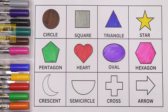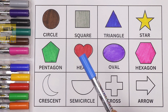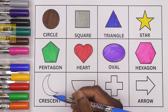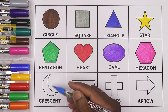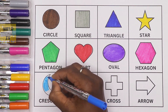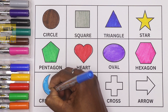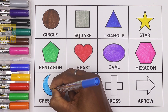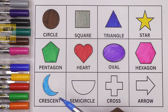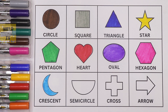Now I'll take blue color to color this shape. This is a crescent. Okay, so now it is a blue crescent, where crescent is the shape and blue is the color.